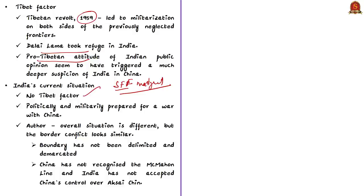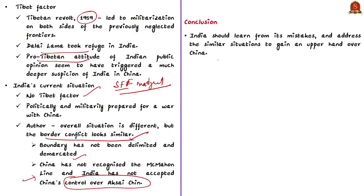According to the author, the border conflict looks similar to what it was in the 1950s and 1960s. Even today, the border has not been demarcated; China has not recognized the McMahon Line as the border on the eastern side, and India has not accepted China's control over Aksai Chin. The author notes that India should carefully evaluate China's moves and motives and should not repeat the same mistakes made in the 1962 war.